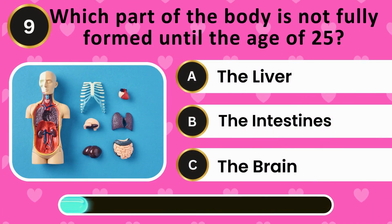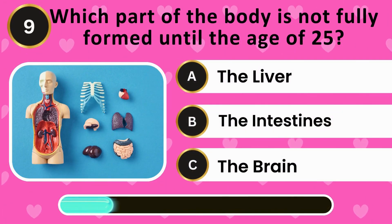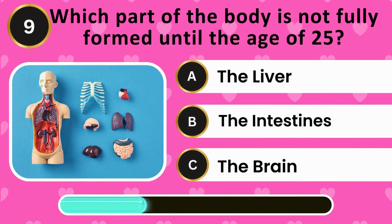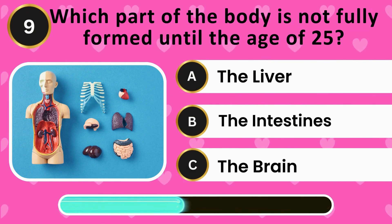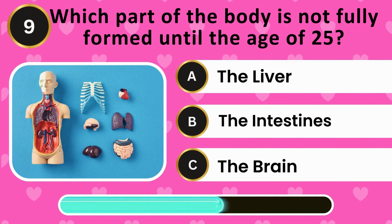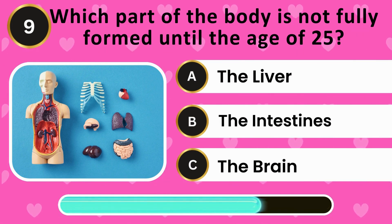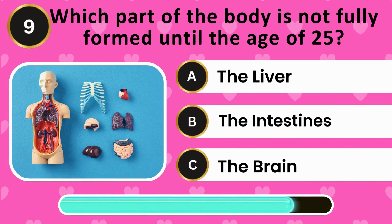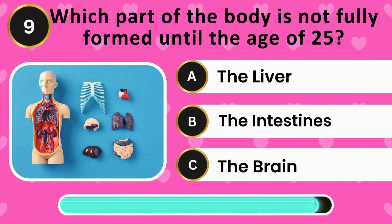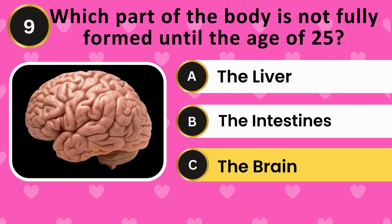Which part of the body is not fully formed until the age of 25? The liver, the intestines, the brain. The answer is the brain.